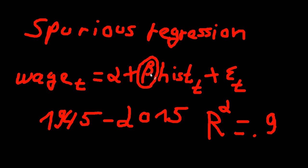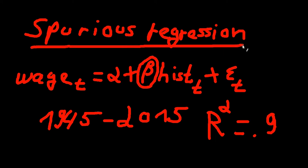So did we just discover the holy grail of economics? It seems as if wages in manufacturing are driven by the number of economic historians. Well, unless you have a very inflated ego, this should ring all alarms. What we have right here is in fact a spurious regression. The result is complete nonsense and tells us absolutely nothing.